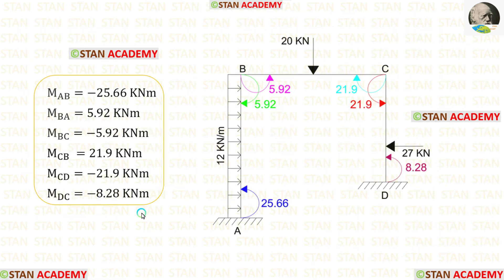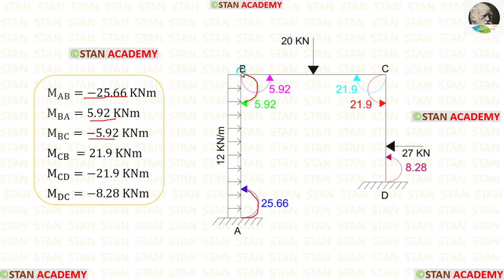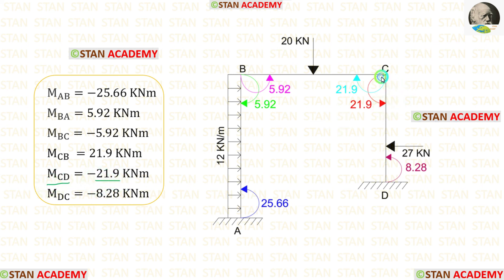For MAB we got a negative value, meaning it is acting in the anti-clockwise direction. For MBA we got a positive value, meaning it is acting in the clockwise direction. For MCB we got a positive value, meaning it is acting in the clockwise direction. For MCD we got a negative value, meaning it is acting in the anti-clockwise direction. For MDC also we got a negative value, meaning it is also acting in the anti-clockwise direction.